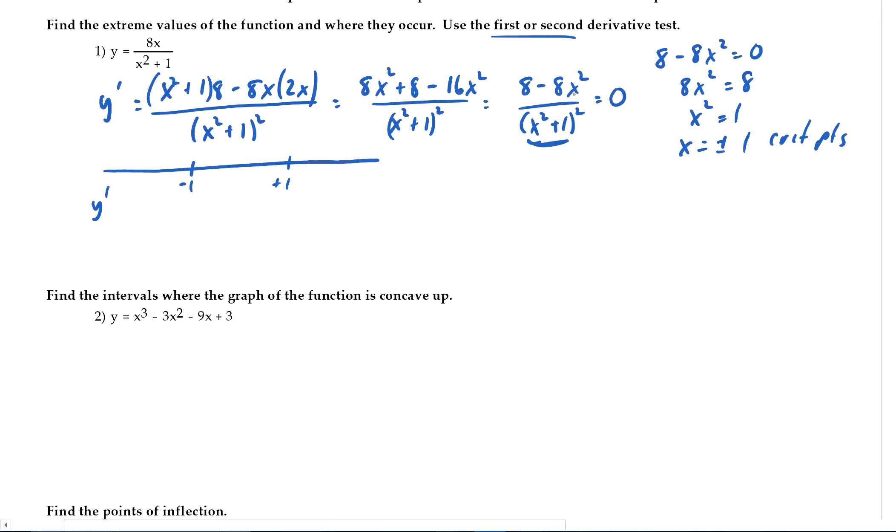So pick a number like negative 2. 8 minus 8 times 4 is negative. Pick a number between these two, like 0. 8 minus 0, y prime is positive. And bigger than 1, like 2. 8 minus 8 times 4 is negative. So here the function is, I'm sorry, I'm saying one thing and writing another. Negative, y prime is negative, so it's decreasing. Then it's increasing and then it's decreasing.